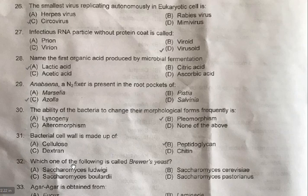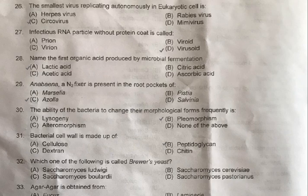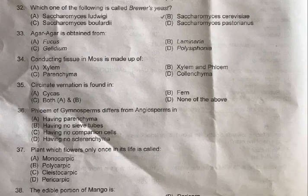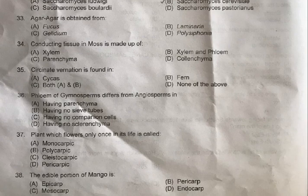Question 32: Which one of the following is called Brewer's yeast — A: Saccharomyces ludwigii, B: Saccharomyces cerevisiae, C: Saccharomyces boulardii, D: Saccharomyces pastorianus. The correct option is B, Saccharomyces cerevisiae. It is also called Baker's yeast, used for the production of bakery products and beverages.